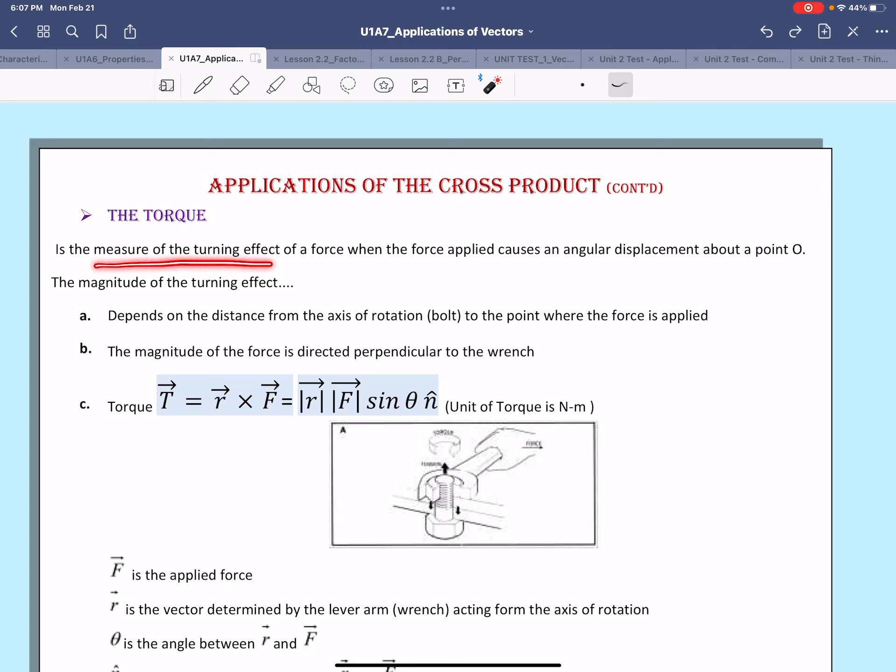Remember torque is the measure of the turning effect of a force when the force applied causes an angular displacement about a certain point. You can think of the torque as the measure of turning effects of a door. When you open and close the door, is it easier to open or close the door if you use the handle on the edge of the door or if you just push the door here close to the hinge?